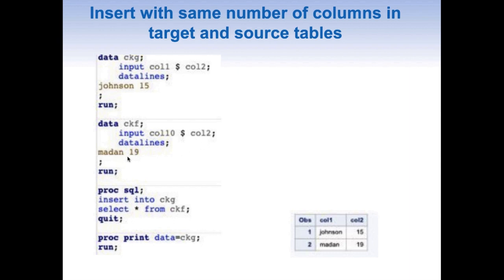We have another dataset CKF with col10 (character) and col2, containing 'madan' and 19. If we want to insert into CKG from CKF, CKG is called the target table and CKF is the source table. The syntax is straightforward: INSERT INTO CKG followed by SELECT * FROM CKF. This inserts one row from CKF into CKG, and the log will also confirm that one row was inserted.